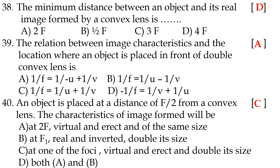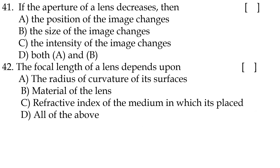Forty-first question: if the aperture (diameter) of a lens decreases, option C, the intensity of the image changes. Forty-second question: the focal length of a lens depends upon option D, all of the above — radius of curvature of surfaces, material of the lens, and refractive index of the medium in which it is placed.